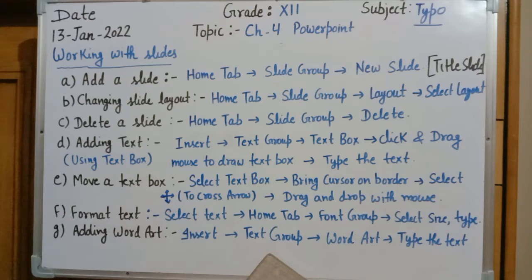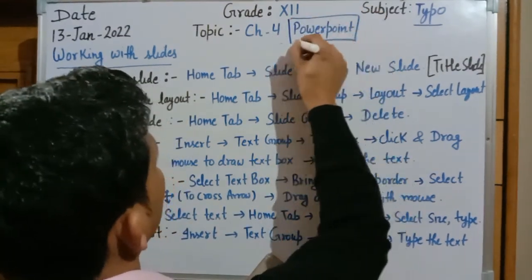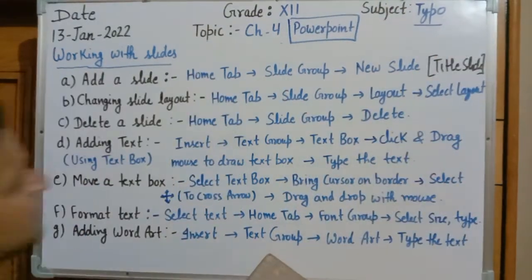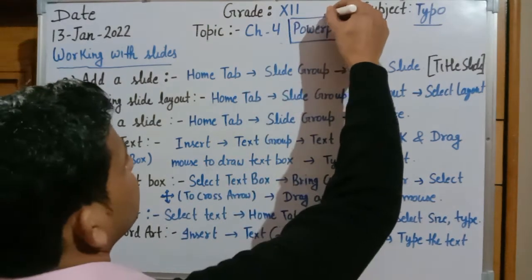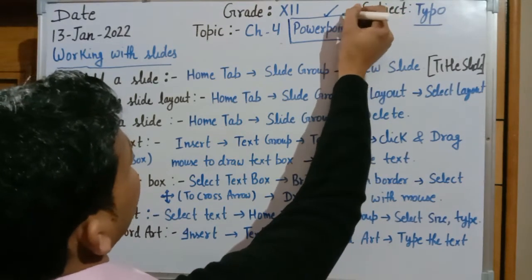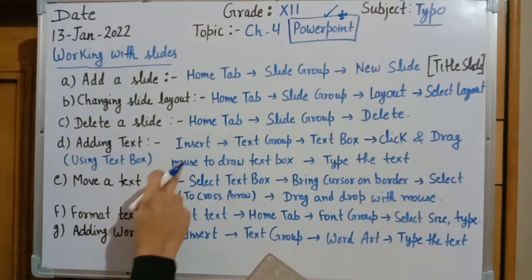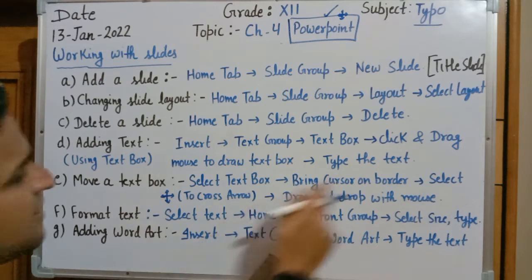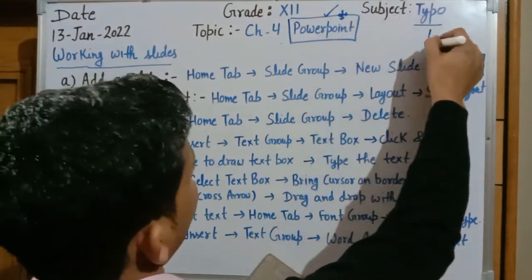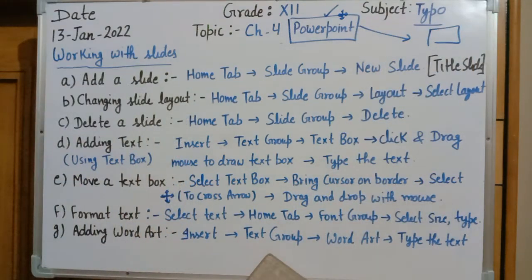Next is how to move a text box — meaning how to change its position. Select the text box with a single click, then bring your cursor to the border or corner. The cursor will display a cross arrow. Select the cross arrow and drag and drop the text box to the desired position.